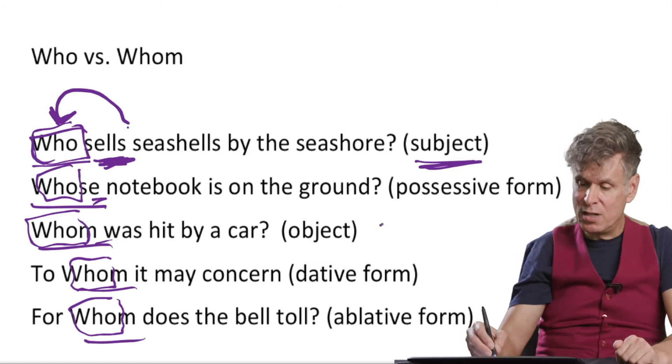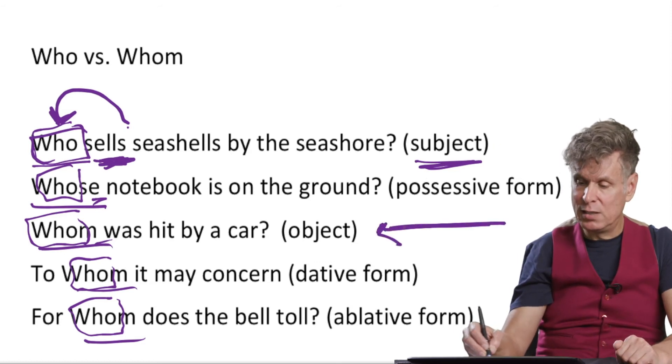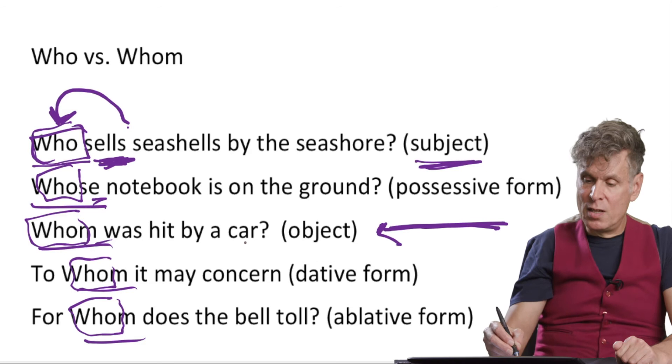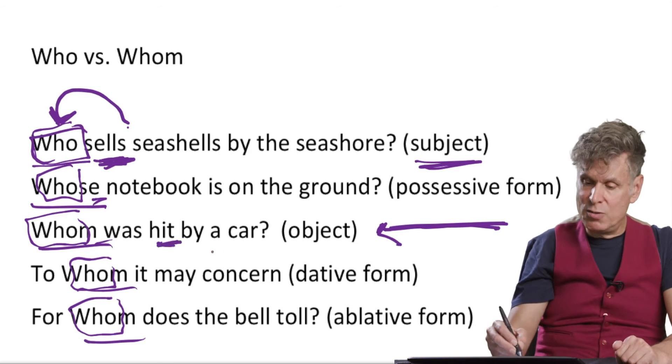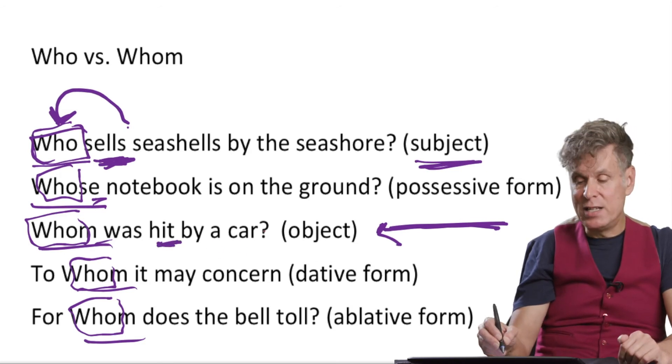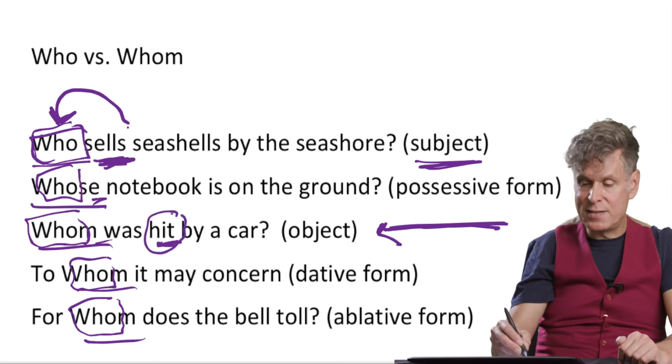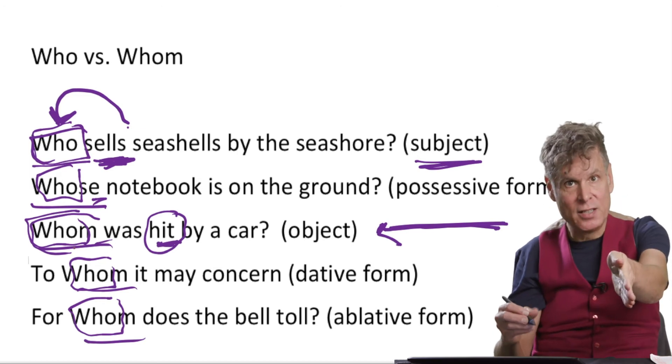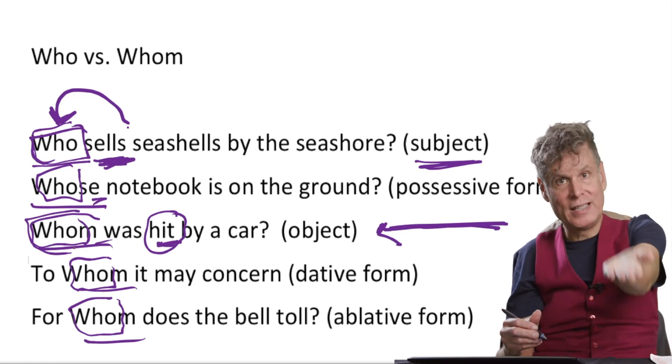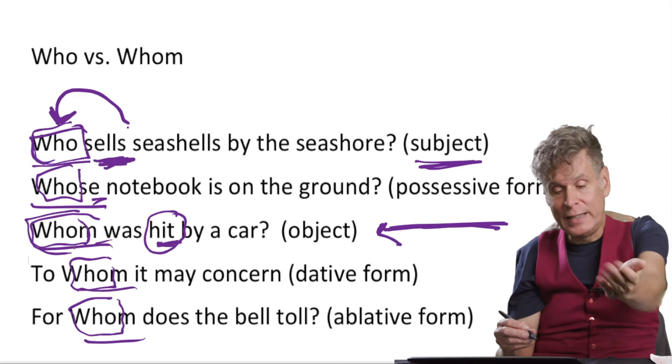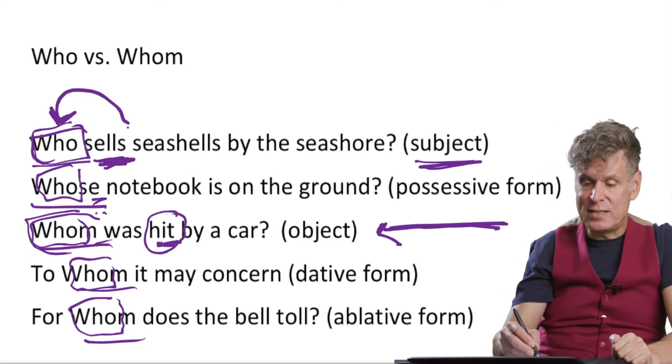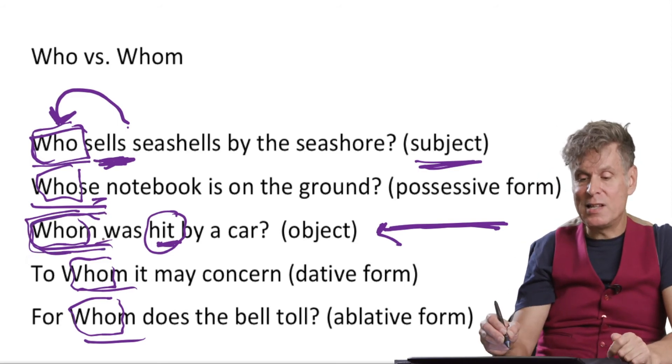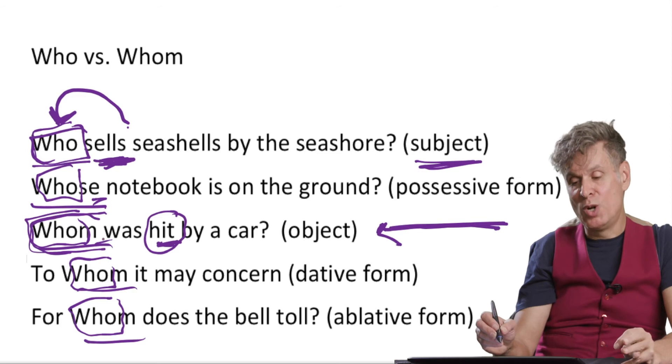That's in sharp contrast to this example here. The person doing the hitting is actually not in this sentence, but that's the subject and then whom, you get hit by the car. So you're the object. There's the driver of the car who's doing the hitting and then you get hit. And because it's the object and not the subject, you say whom. Whom was hit by the car? That would be the proper way.